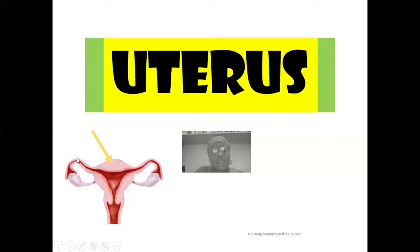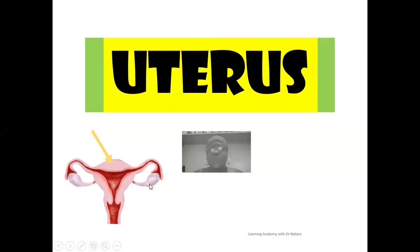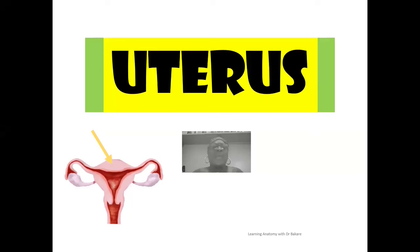We have two uterine tubes, one on each side. If you also go to the terminal end of the uterine tube, we then have the ovary, and we also have two ovaries. I've put up lectures on the uterine tube and the ovary — please go and check those. For the purpose of this class, we'll be focusing on the uterus, highlighting its gross anatomy and discussing important anatomical features.